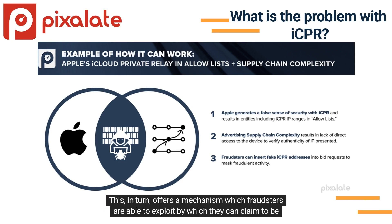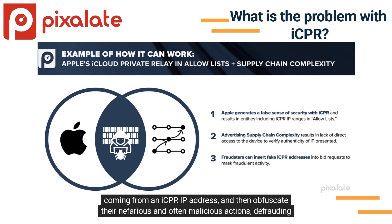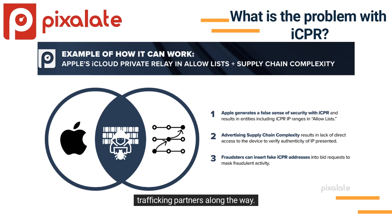This in turn offers a mechanism which fraudsters are able to exploit, by which they can claim to be coming from an iCPR IP address and then obfuscate their nefarious and often malicious actions, defrauding trafficking partners along the way.